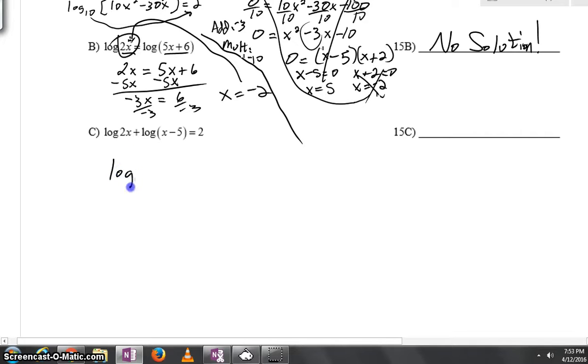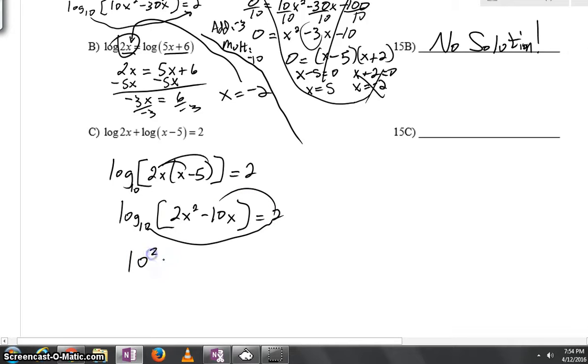Last one. Let's combine the two logs on the left. With that addition property, we can condense the two logs by multiplying their insides together. I'm going to distribute the 2x to get 2x squared minus 10x. And right now I'm going to do a log circle. I'll get 10 to the second is equal to 2x squared minus 10x. And 10 to the second is actually 100.